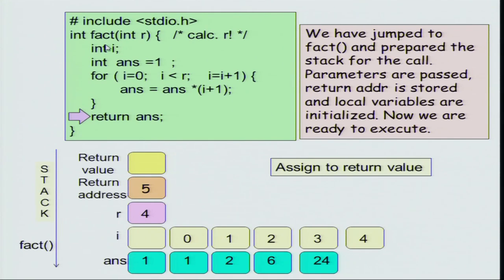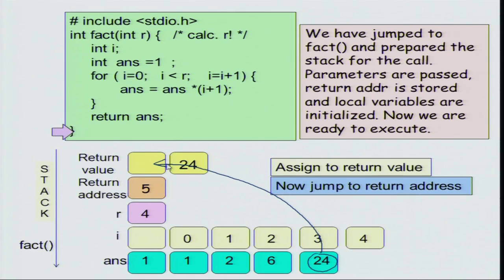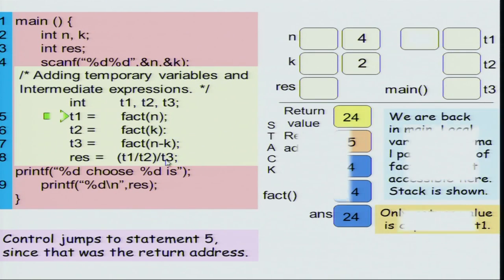This value 24 is returned — the answer value 24 is copied to the return value location. The return value gets the value 24 and we jump back to the return address, which is line 5. We jump back to line 5 and set t1 equal to 24. Only the return value is copied back to the main program; all other things are irrelevant. The stack that was allocated to the execution of factorial is completely erased. Once the function returns to main, the entire stack is deleted and only the memory originally allocated to main remains.